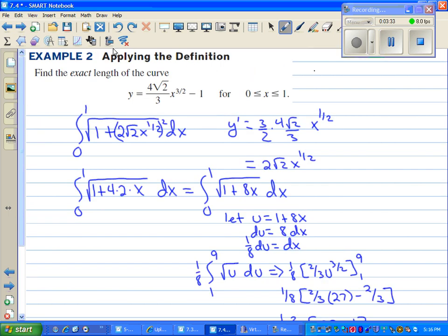In example two, we're applying the definition. Find the exact length of the curve, y equals this mess, for 0 to 1. So we're going to integrate from 0 to 1, the square root of the derivative squared. And the derivative of this whole function is 3 halves times 4 times the square root of 2 over 3 x to the 1 half.